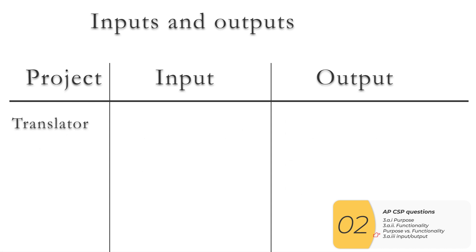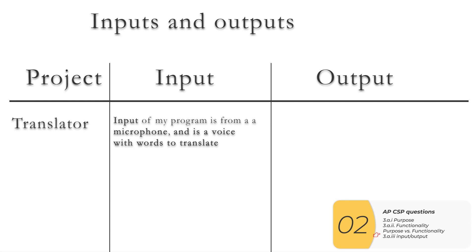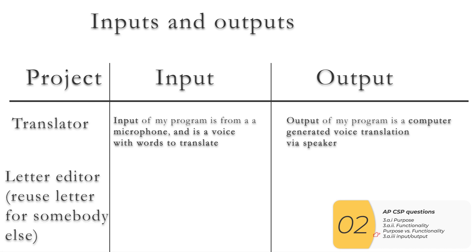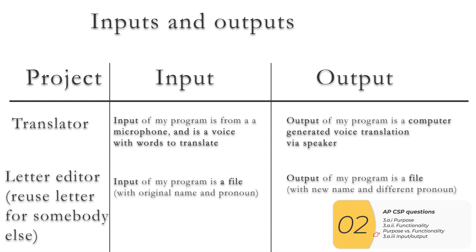In a translator program, the input will be from the microphone — that's how — and what it is: a voice with words to translate. The output will be a computer-generated voice through a speaker. Finally, a form letter editor: the input is a file — that's how — containing the letter contents with original names and pronouns. The output is another file with substituted names and changed pronouns. These last two examples show that outputs don't have to be printouts to screen — printouts to screen will probably be most common, but it's not the only option.